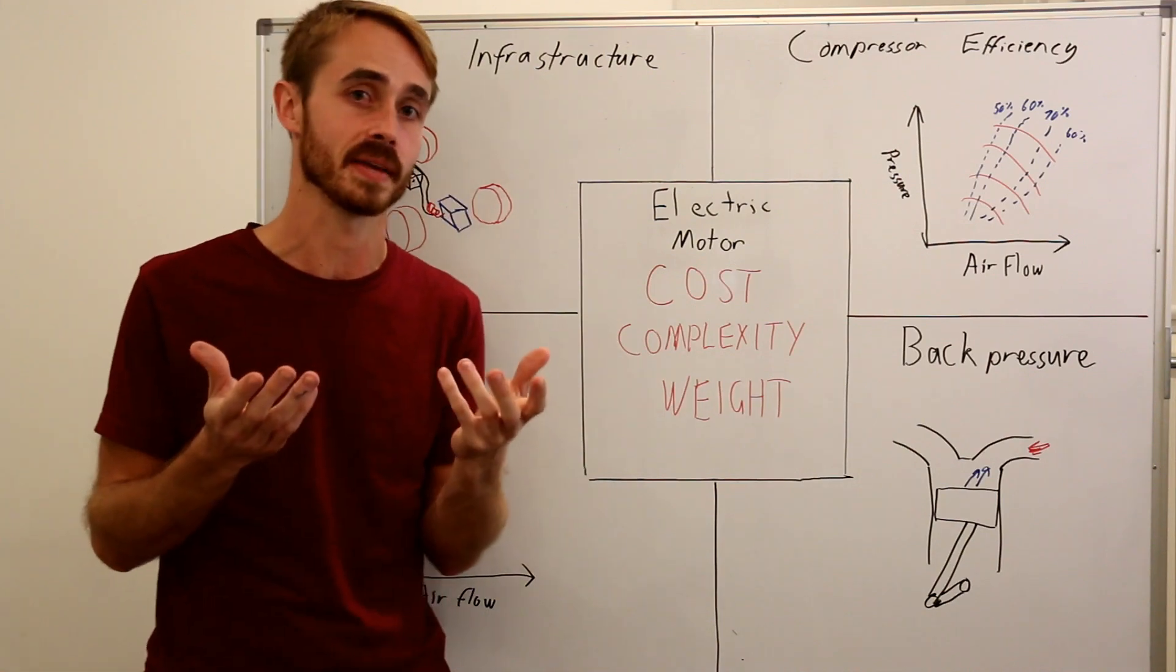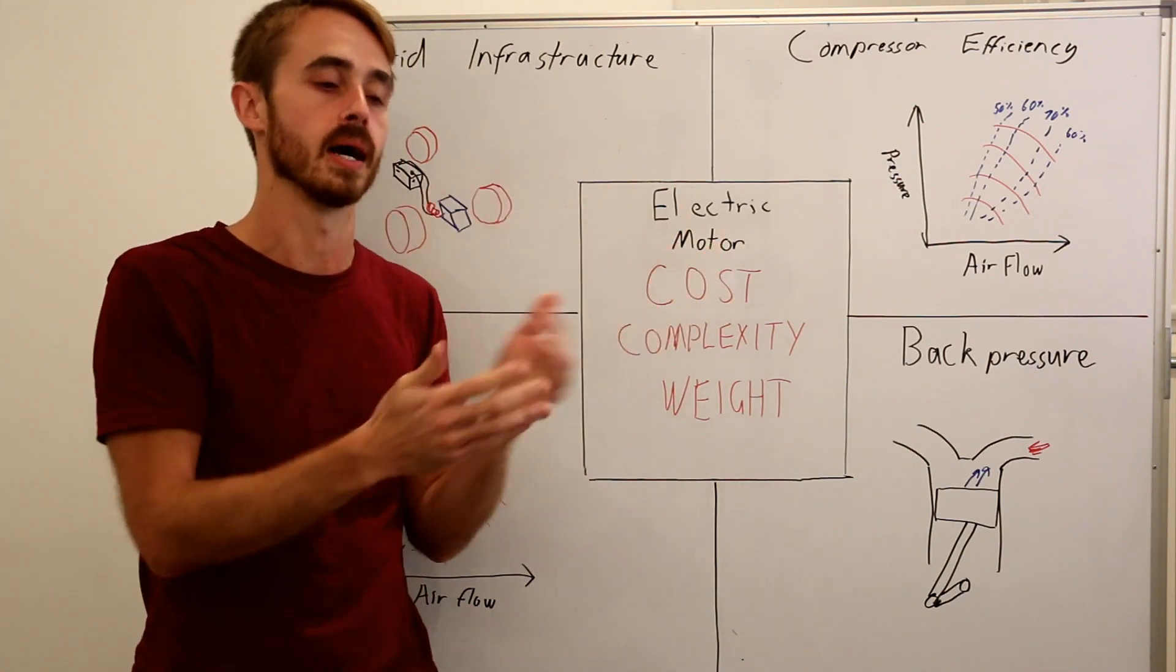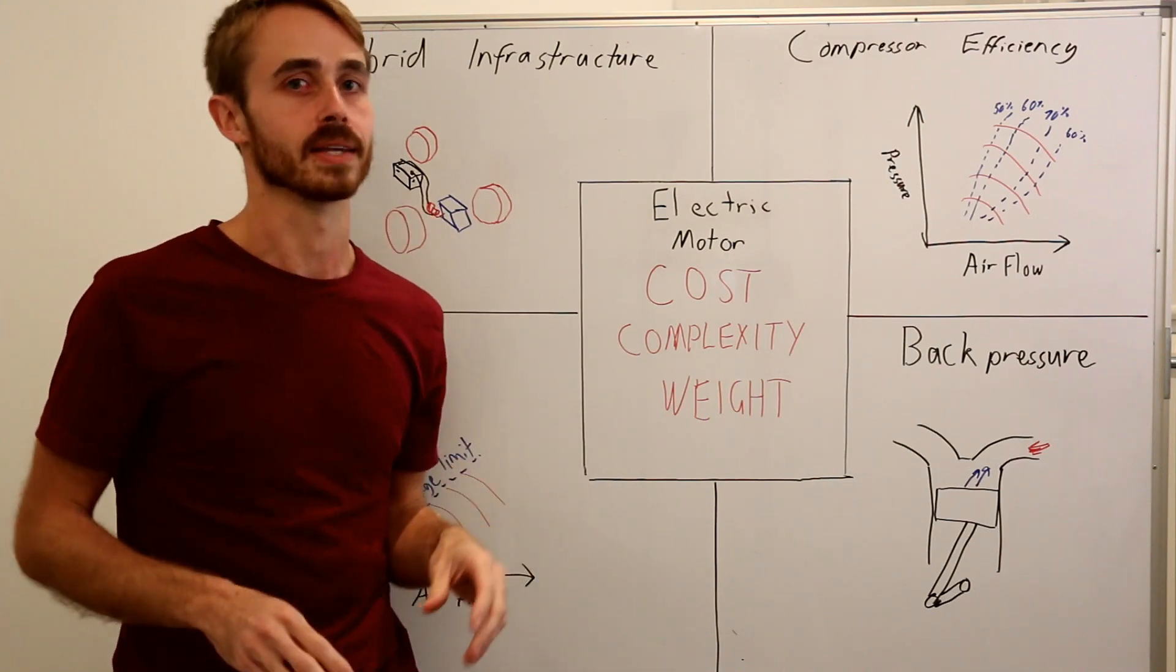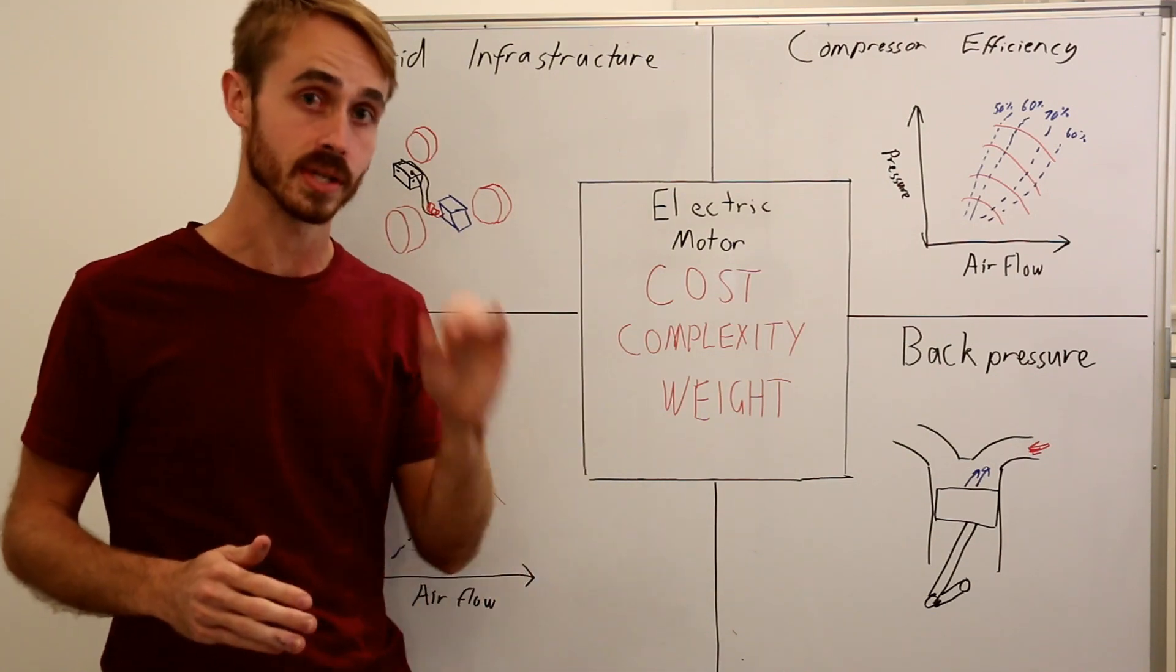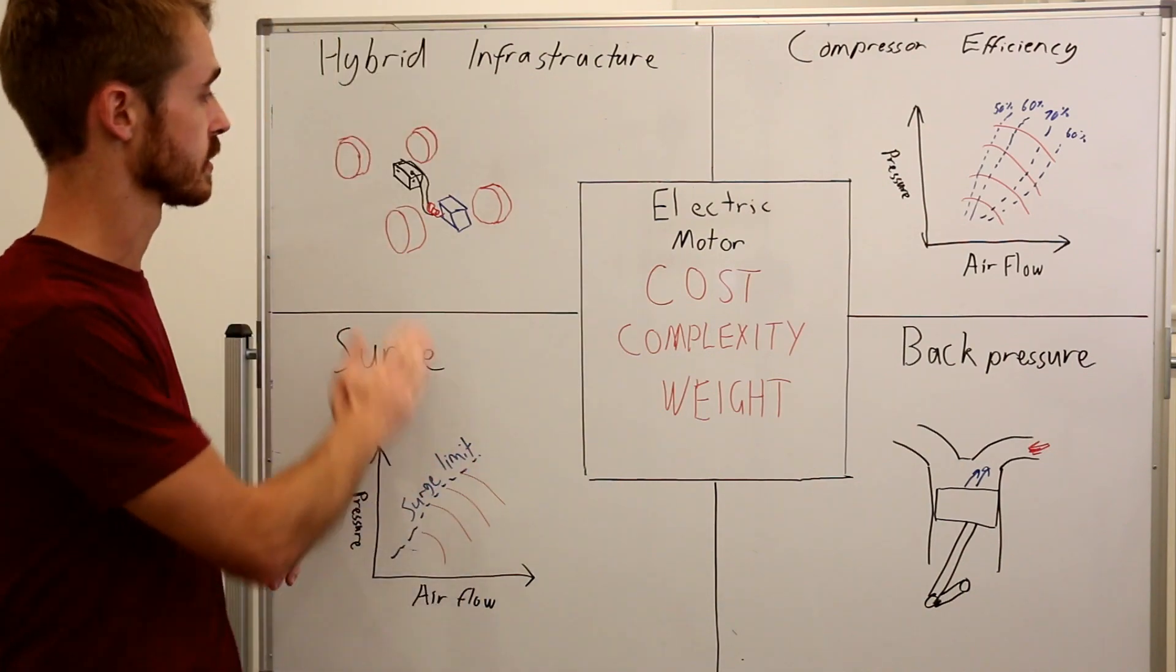And this is perhaps exemplified by the fact that the Bugatti Chiron, the latest really hyper hypercar, is not running electric turbos, instead it's running sequential turbos. And there's actually a very good reason behind that. So let's get into it. Now the first reason is,